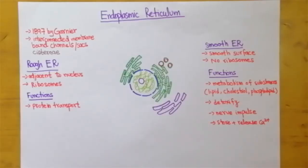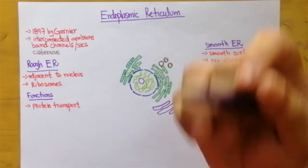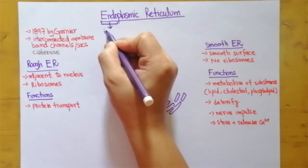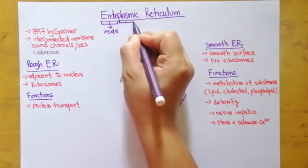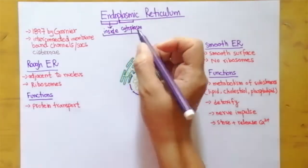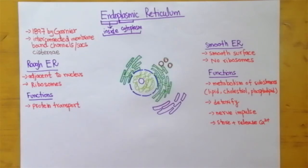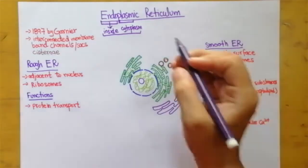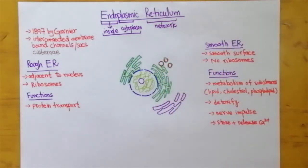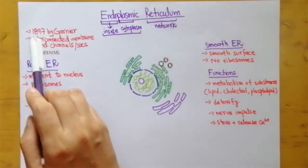Welcome back learners. Today's lesson is about the structure and function of the endoplasmic reticulum. Let's dissect this word: 'endo' means inside, 'plasma' means cytoplasm, so 'endoplasmic' means the portion of cytoplasm inside. The word 'reticulum' means network, so endoplasmic reticulum means there is a network present inside the cytoplasm. This network was first discovered in 1897.